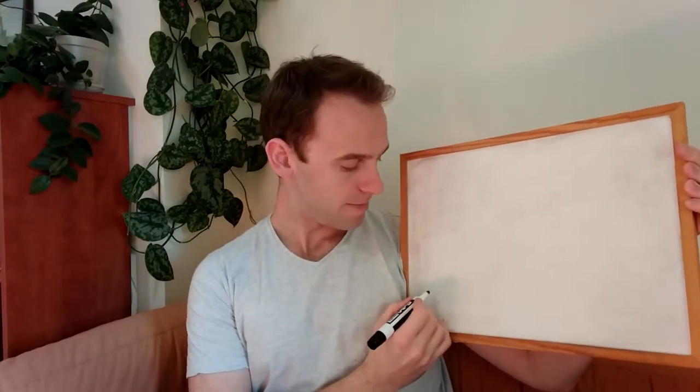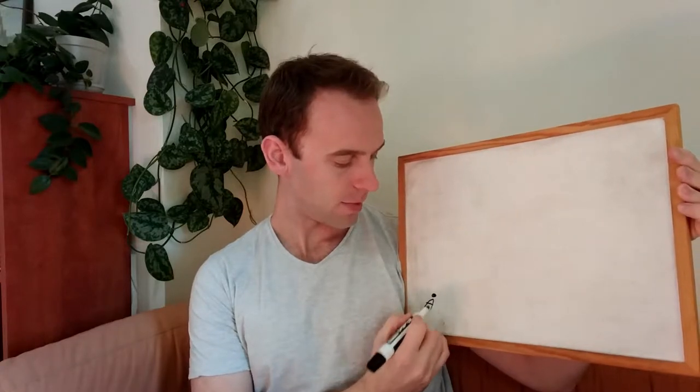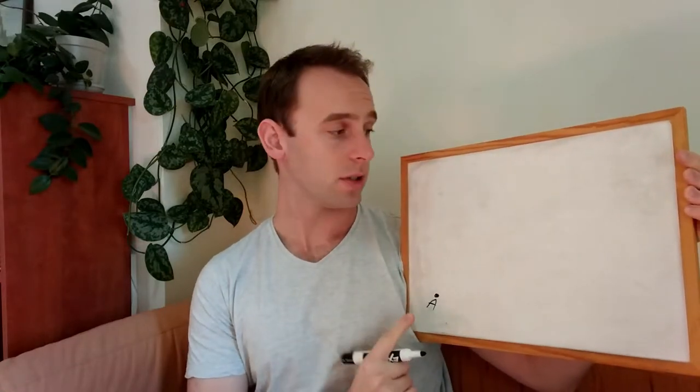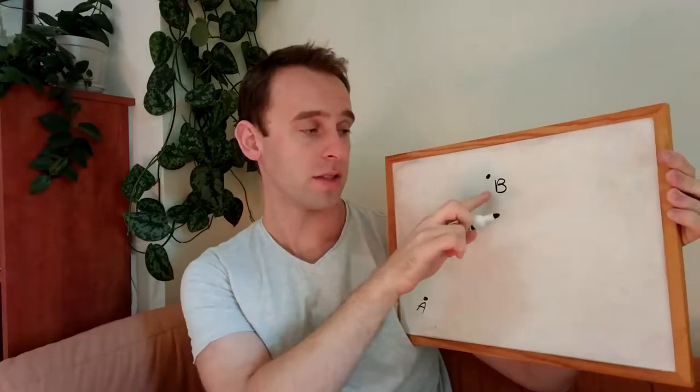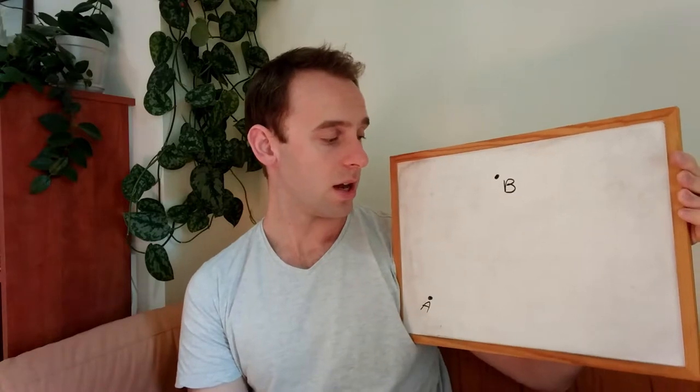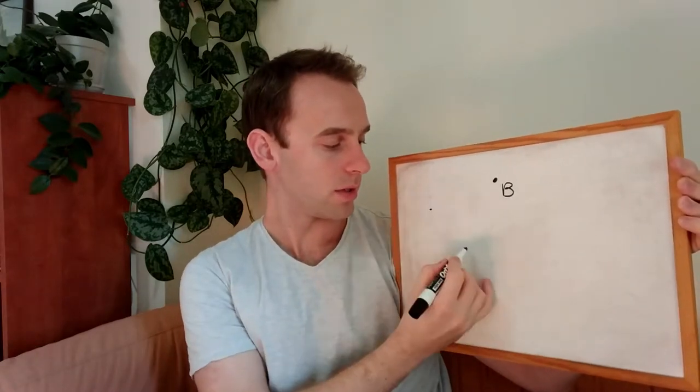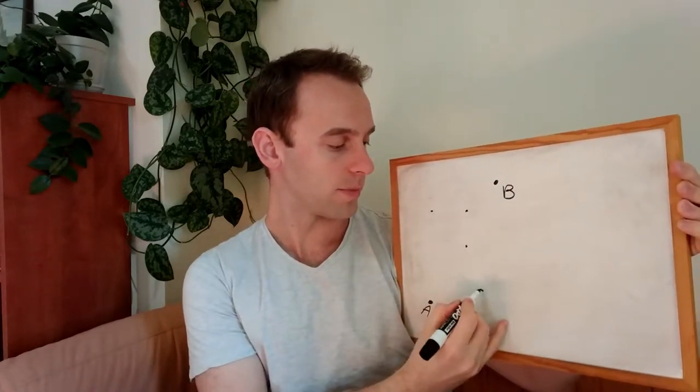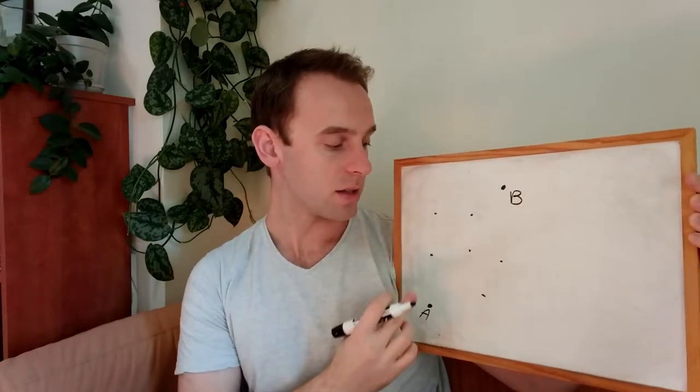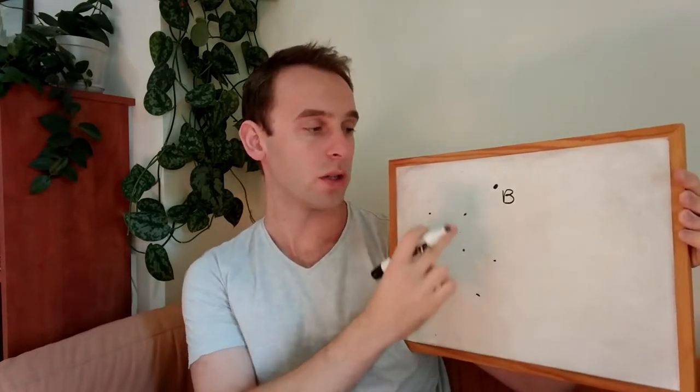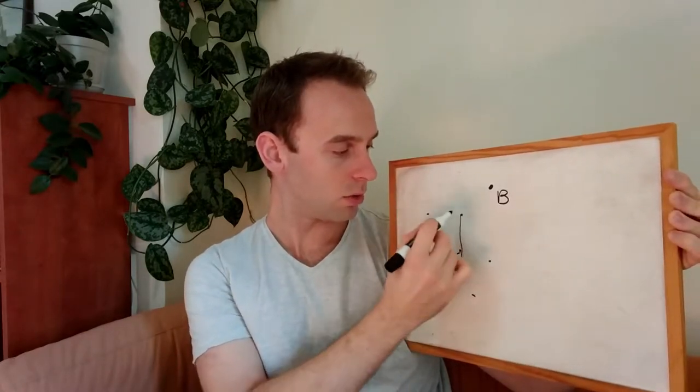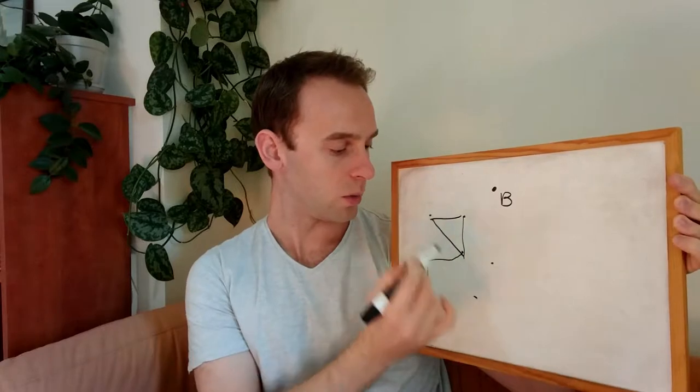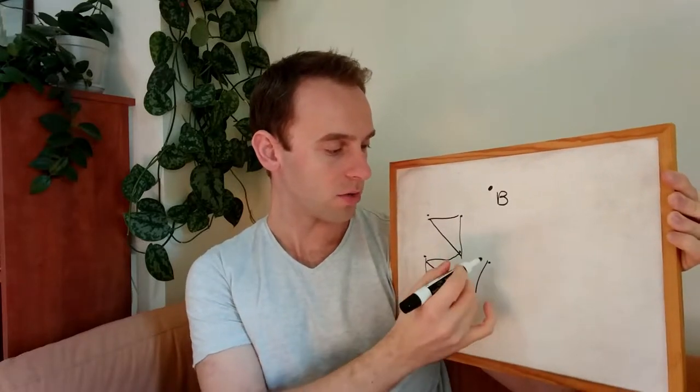So let's start by describing the problem that we have. We have point A, this is our starting point, and we have point B, and this is the point that we want to get to. Now, there are other points which I will call nodes, and these nodes are places that we can visit while going to node B, and there are connections from some nodes to others, while we don't have connections from other nodes.